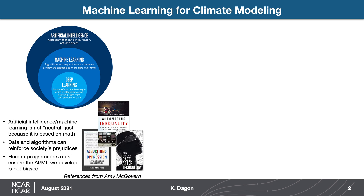An important point before we get started: AI and machine learning are not always neutral, just because they're based on math and statistics. Data and algorithms can reinforce society's prejudices, so it's really important for human programmers to ensure that the AI and machine learning algorithms we're developing are not biased. There's lots of great reading on this topic if you're interested in learning more.